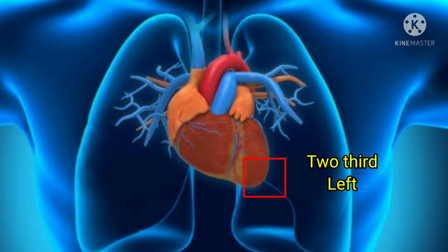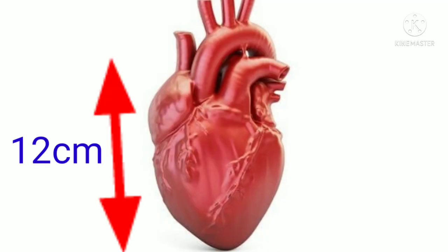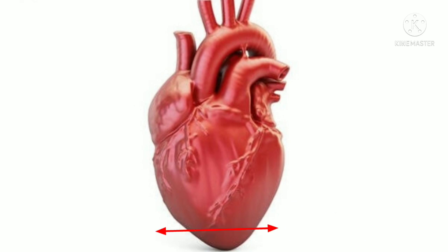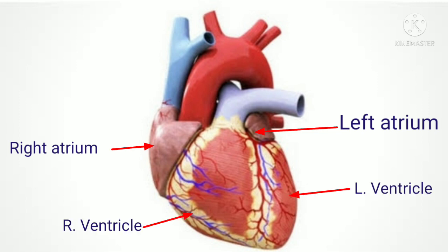One-third of the heart is situated on the right side. The length of the heart is approximately 12 centimeters and the breadth is 9 centimeters. The two upper parts are called the atrium and the lower parts are called the ventricle.